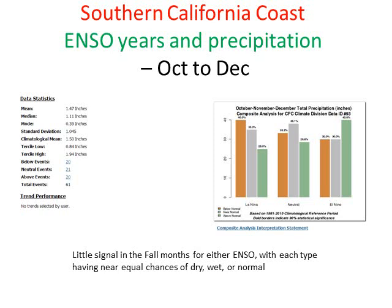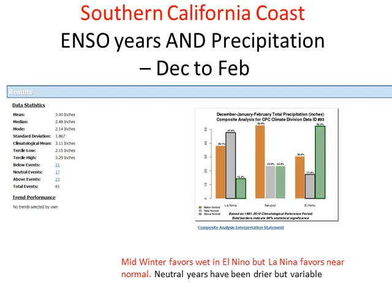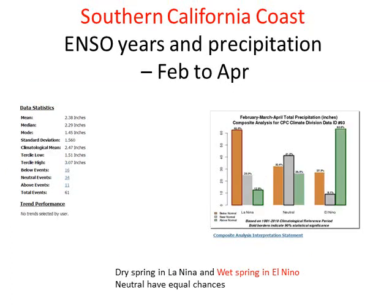Looking at precipitation from October to December in the Southern California coastal zone, for the most part there's not much difference in the fall whether you're in an El Niño or La Niña. When you get into the middle of winter, however, El Niño clearly favors a wetter pattern while La Niña favors closer to normal. Neutral years have been drier but also variable. In El Niño years, precipitation significantly jumps in the winter months for the Southern California coast. And there's also a spring signal — El Niño years tend to have wetter springs, a prolonged extended winter, while La Niña years tend to be very dry in spring.